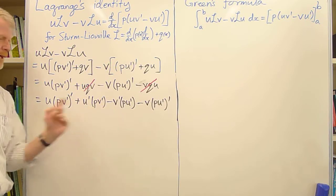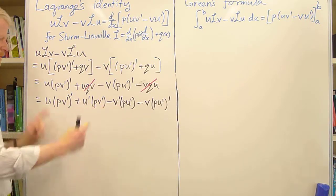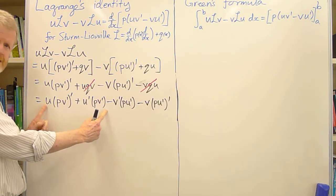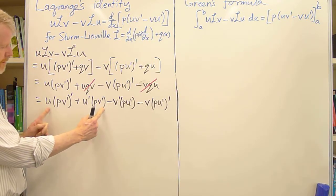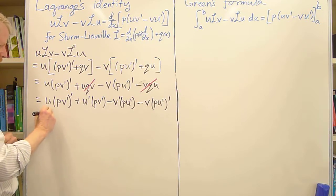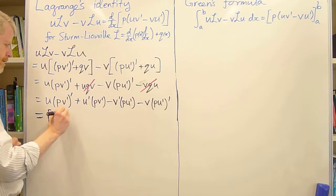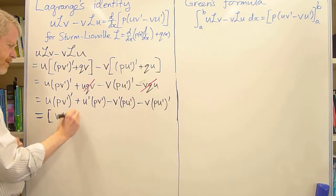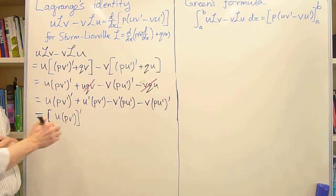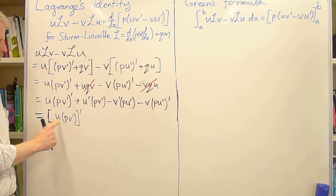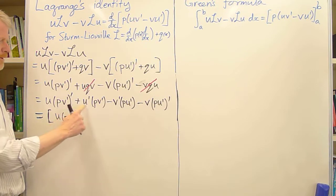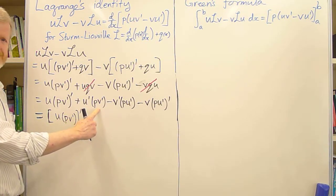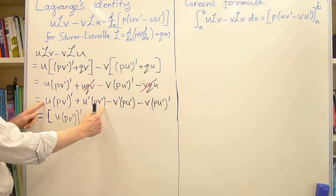Now, the great thing about adding and subtracting these two terms is we now look at these first two together. And those two terms there are precisely what we get from the product rule for differentiation when we differentiate u times pv'. Because we get u times the derivative of the second plus the derivative of the first u' times the second. So that captures those two terms.